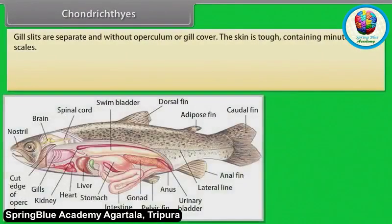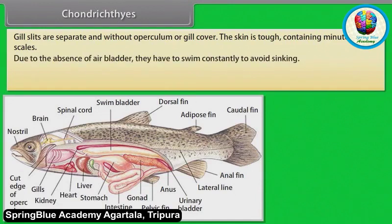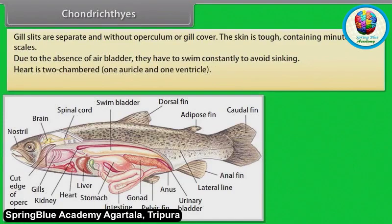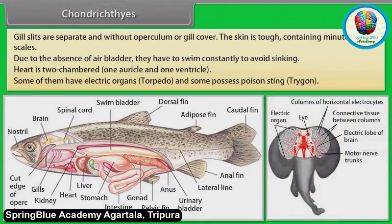Gill slits are separate and without operculum or gill cover. Their skin is tough, containing minute placoid scales. Due to the absence of air bladder, they have to swim constantly to avoid sinking. Heart is two-chambered — one auricle and one ventricle. Some of them have electric organs (torpedo), and some possess poison sting (trigon).